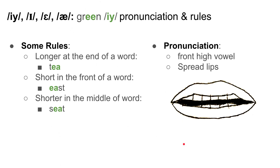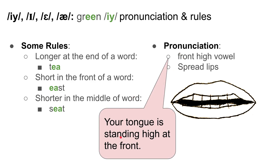Moving forward, let's talk about pronunciation and some rules. E tends to be longer at the end of a word, such as 'T,' but it's short at the front of the word, such as 'East,' and shorter in the middle of a word, such as 'Seat.' The pronunciation — it's a front high vowel. What this means is your tongue is standing high at the front. E — and we say it with spread lips, E.